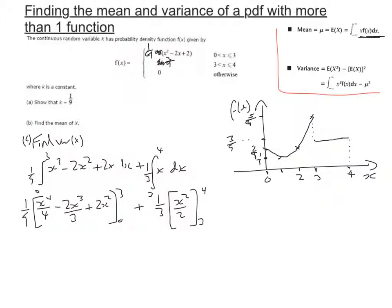If we substitute in our limits, we're going to get 81 over 4 minus 54 over 3 plus 18 over 2 when we substitute in 3.